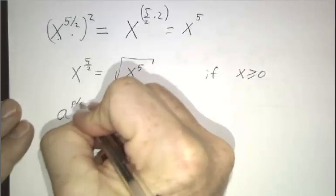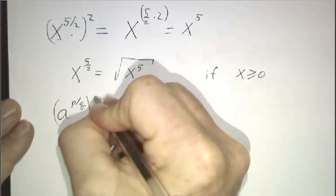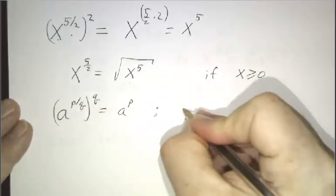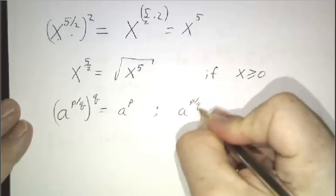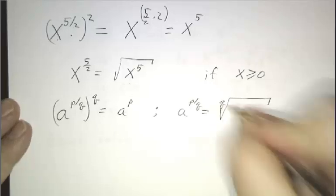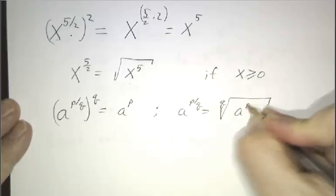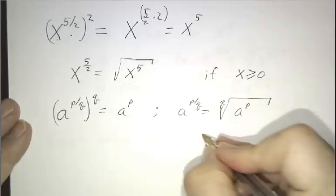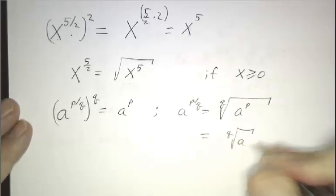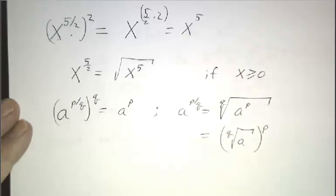More generally, if I say a to the p over q, if you take that to the q power, you got to get a to the p. So that means that a to the p over q must be the qth root of a to the p.